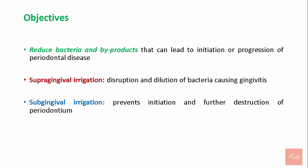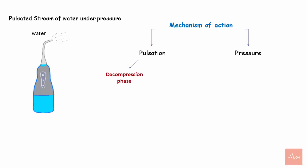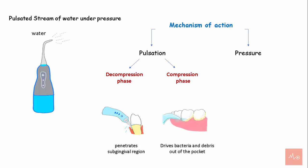Regarding the mechanism of action, the device acts by directing a pulsated stream of water on the tooth surface under pressure. The mechanism of action is through pulsation and pressure. Pulsation leads to a decompression phase, causing water or the solution to penetrate the subgingival region. This is followed by a compression phase that drives the bacteria and debris out of the pocket.